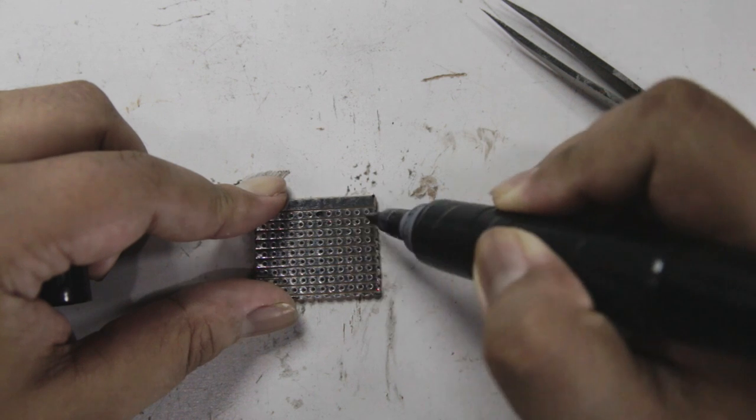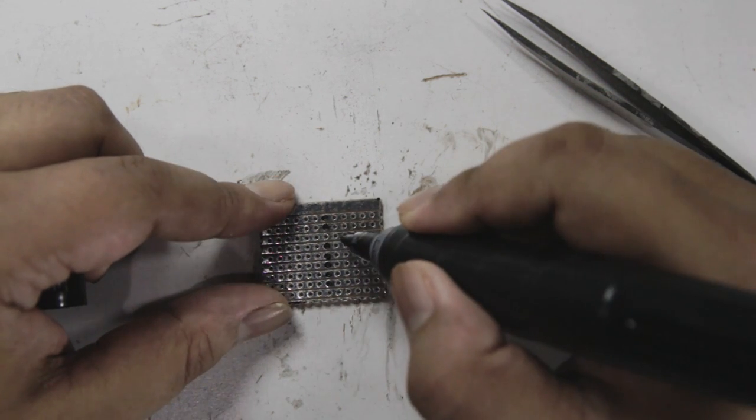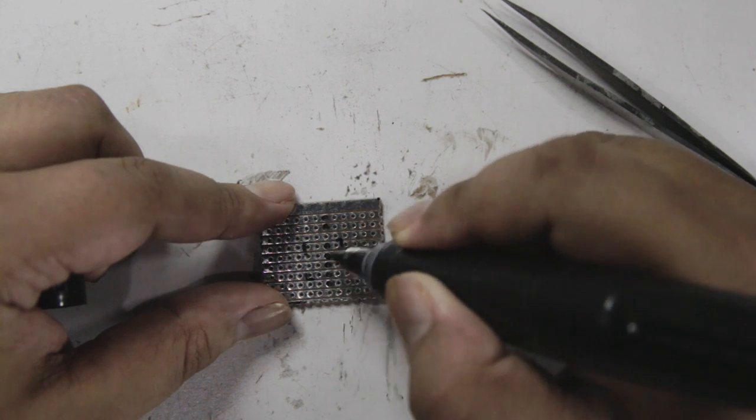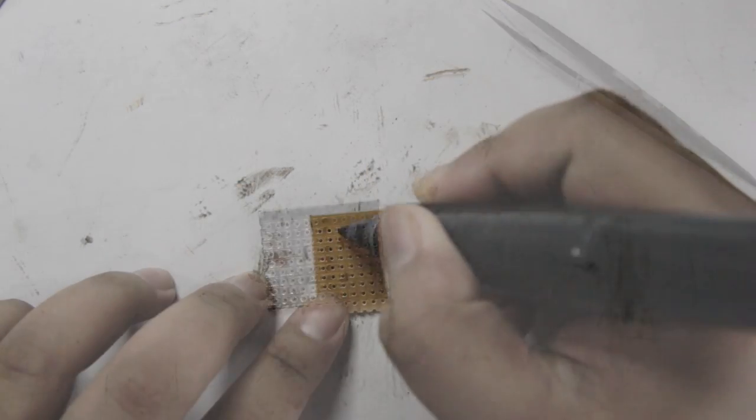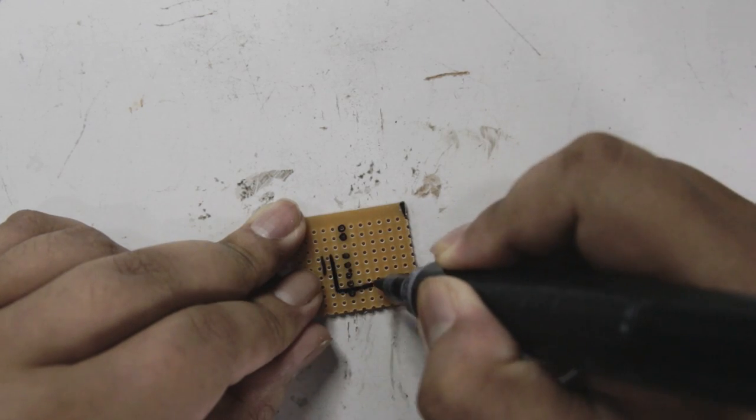Now I use the marker to mark where I need to break the conductive lines on the stripboard. I also roughly mark the position of the op-amp. I do the marks on both sides of the stripboard. This will later be used as a guide when I install the actual components.